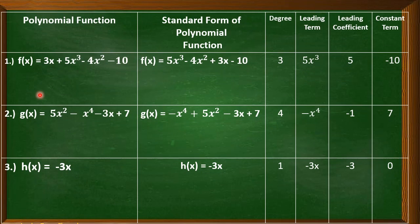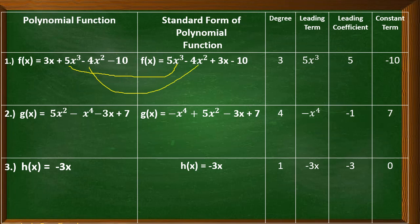Now we are going to write the polynomial function in standard form. Number one: f(x) = 3x + 5x³ - 4x² - 10. We arrange the terms according to degree — the exponent of the variable. So we write 5x³ first (degree 3), then -4x² (degree 2), then 3x (degree 1), and last -10 (degree 0). This is now the standard form.